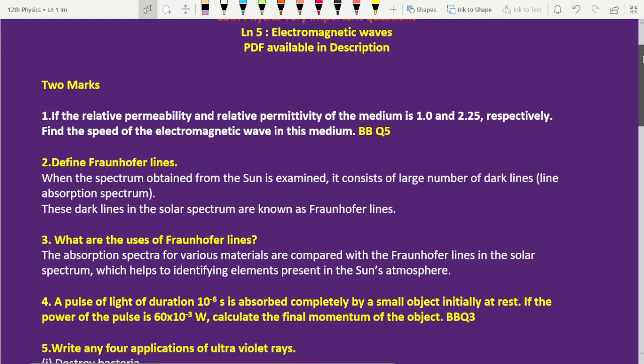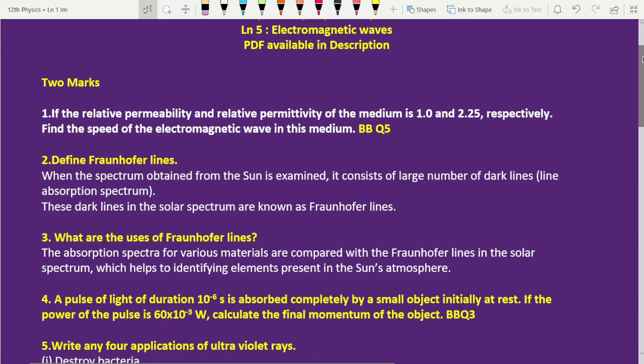If the relative permeability and relative permittivity of a medium is 1.0 and 2.25 respectively, find the speed of electromagnetic wave in this medium. Bookback question, question number 5. Lesson 5, bookback question number 5.